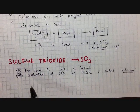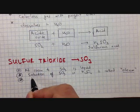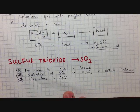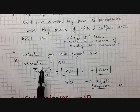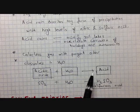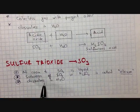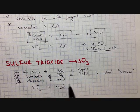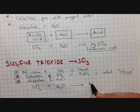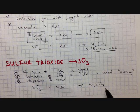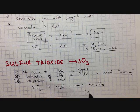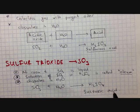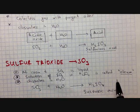Sulfur trioxide also dissolves in water. Since it is an acidic oxide, SO₃ plus water produces the most important acid in the chemical industry: sulfuric acid (H₂SO₄).